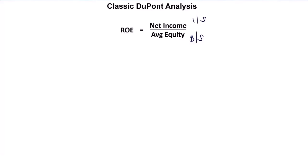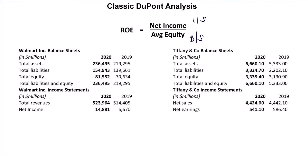Let's illustrate that by looking at two hopefully familiar companies. On the left, Walmart — a huge US retailer that sells produce, toys, clothes, basically everything. On the right, Tiffany & Co., a very high-end jewellery store. If we look at net income for Walmart in 2020, it's $14,881 million. Tiffany, $541 million. So vastly different — Walmart's net income is about 27 times that of Tiffany & Co.